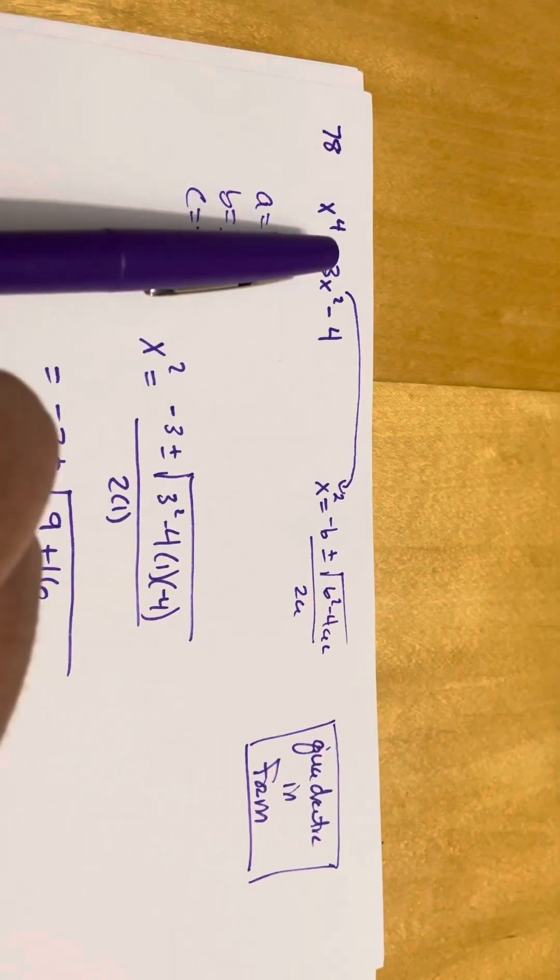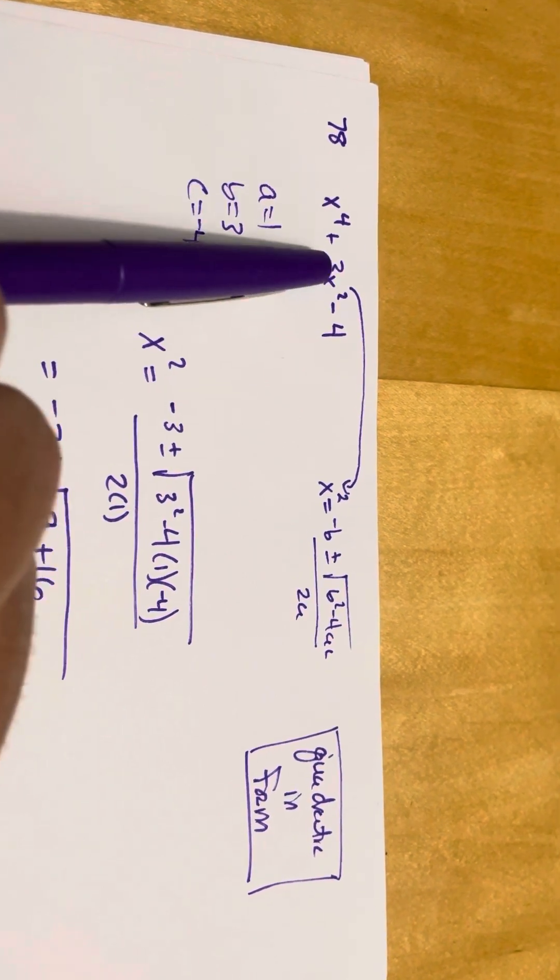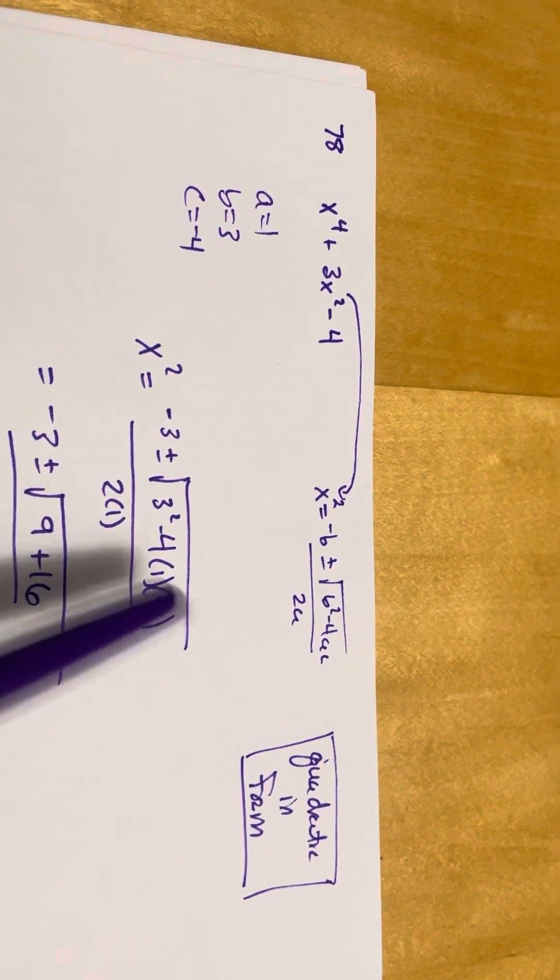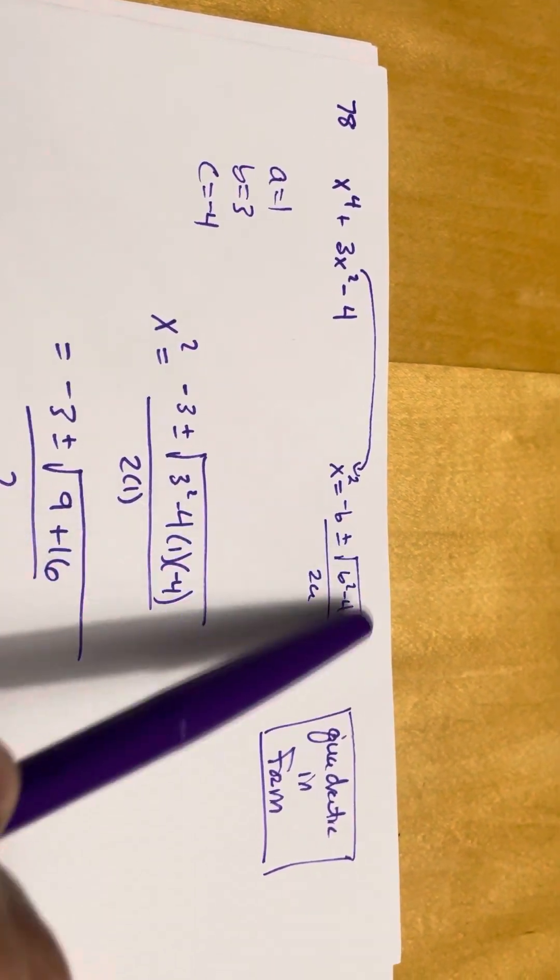You say a is the coefficient here, which is 1. b is the coefficient here, which is 3. And c is the constant, which is negative 4. And you just plug it into the quadratic formula.